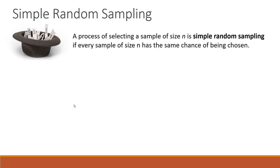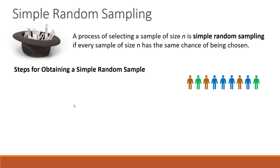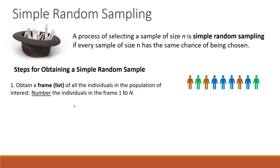When researchers decide to conduct simple random sampling, they usually don't use a hat and pieces of paper, since the number of individuals in a population can be very large. Instead, these are the steps they follow. To obtain a simple random sample, you start by creating a frame — it's just a fancy name for a list — of all the individuals in the population. Then you assign a number to each individual on that list or frame.